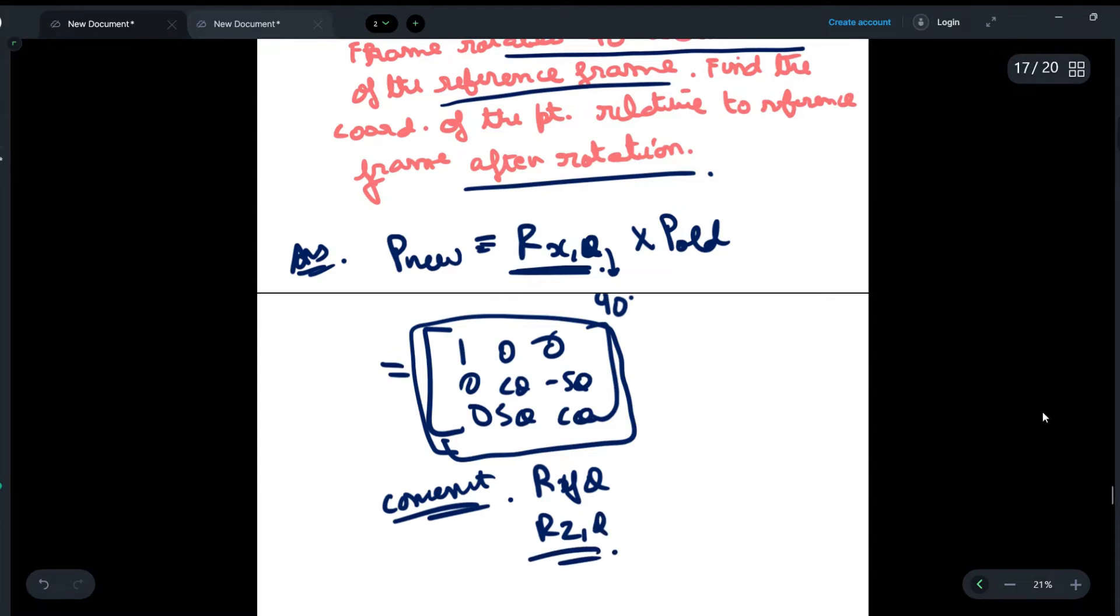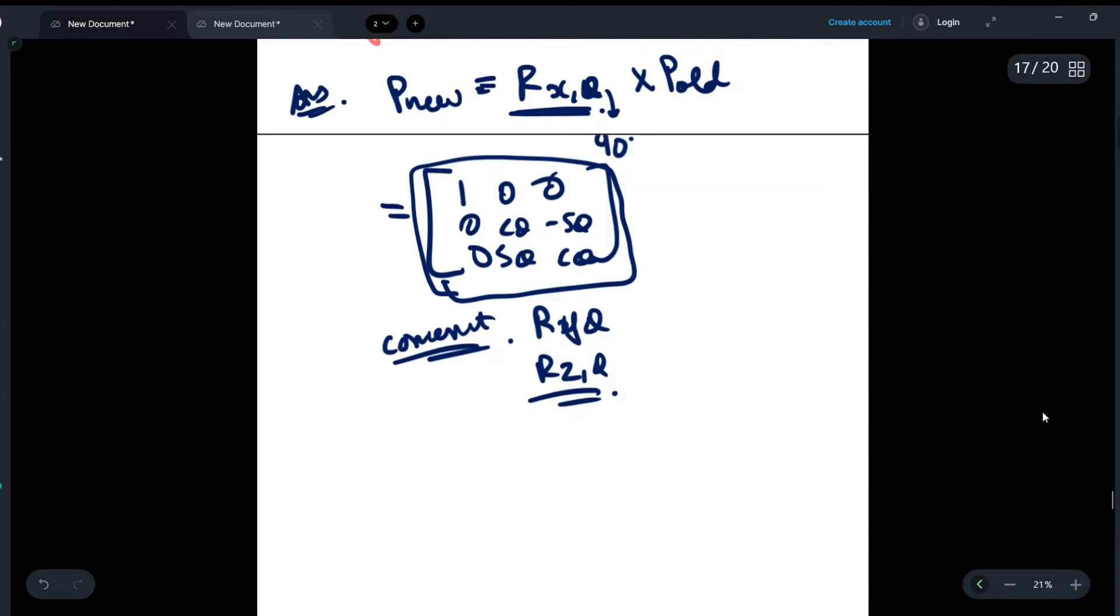Coming back to the question, we have written the rotational matrix for x. Now we will multiply it by P_old, which is given to us as [2, 3, 4].